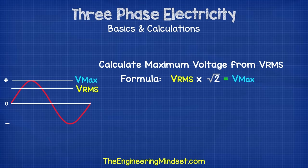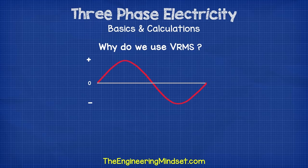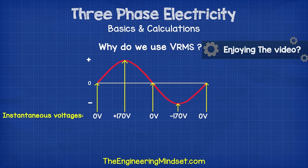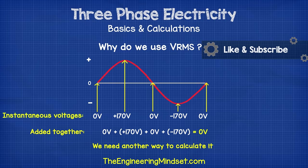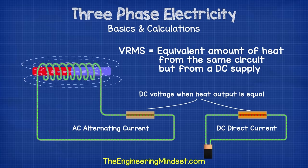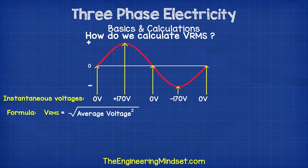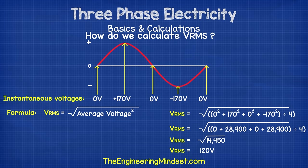We can calculate this peak or maximum voltage using the formula V_RMS multiplied by the square root of 2. Because the sine wave passes through the same points in both the positive and negative half of the cycle, if we added all instantaneous voltages together we would get zero volts. So someone came up with the RMS value: they worked out how much heat an electrical heater could produce connected to an AC circuit, then connected it to a DC circuit and increased the voltage until it produced the same amount of heat, working out a formula — the square root of the squared average instantaneous voltage. A sine wave with 170 volt peaks comes out to 120 volt RMS, which is what we get at the plug socket.